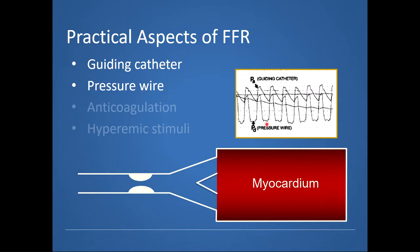Signal drift can happen due to a variety of causes — sometimes due to a temperature change in the area of the sensor. After the pressure wire assessment, we pull it back to confirm there has not been significant signal drift.